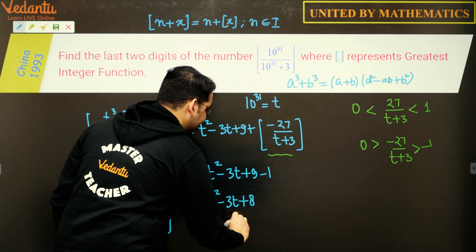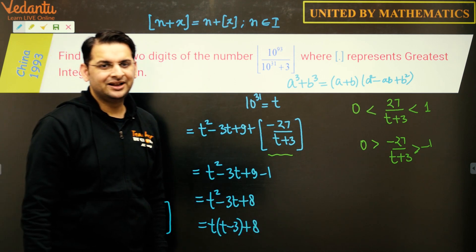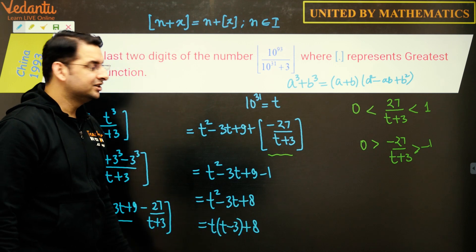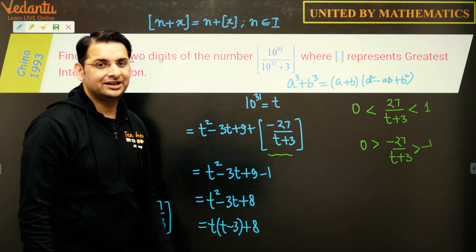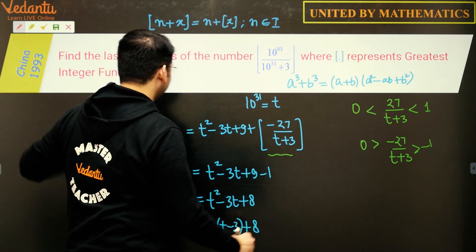If I take t common from the first two, it will be t(t minus 3) plus 8. Now let us look at it carefully. So t is a number 10 to the power 31, so what we have is we have an expression t into t minus 3 plus 8.